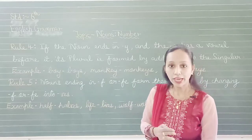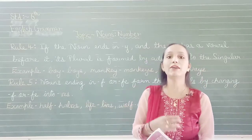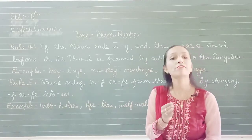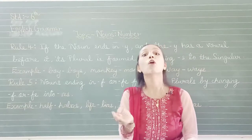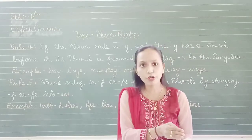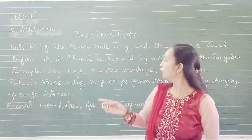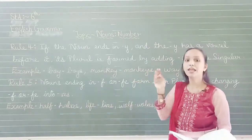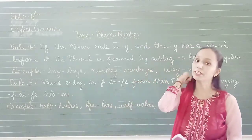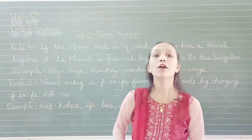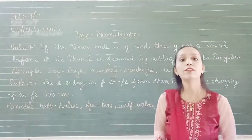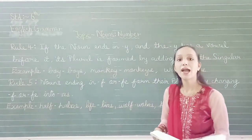Remember this rule: when Y has a vowel before it, you will add S. And if it has a consonant before it, you will remove the Y and add IES.